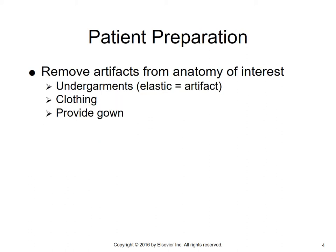As far as patient preparation is concerned, whenever you're doing a hip or a pelvis, you want to remove any artifacts from the anatomy of interest. This would include any undergarments that may have elastic in it that may cast a shadow, clothing, and then provide the patient with a hospital gown.